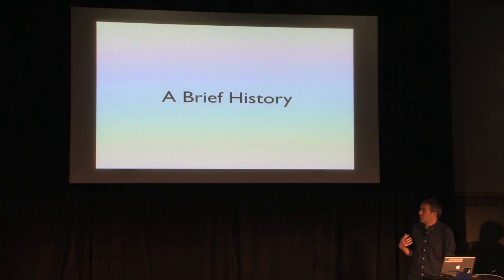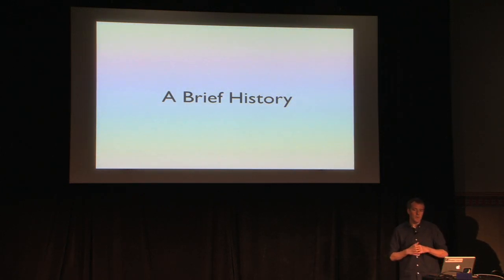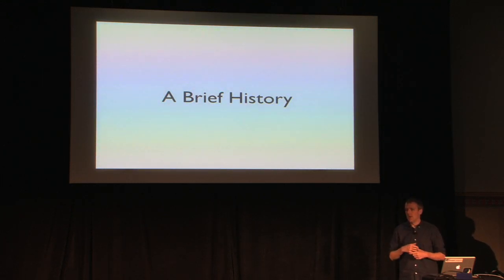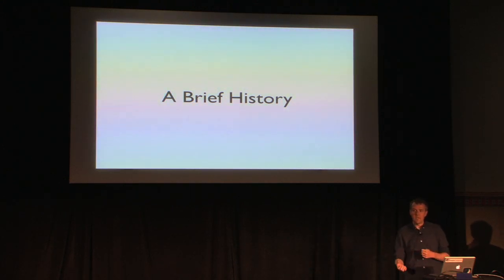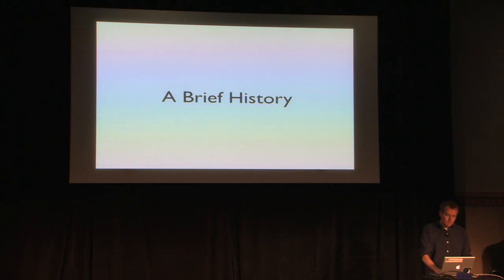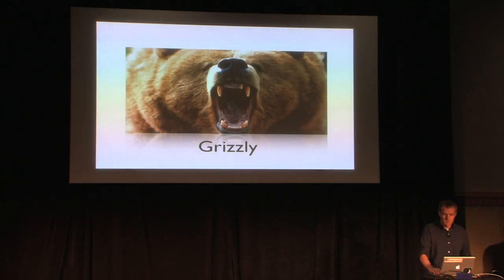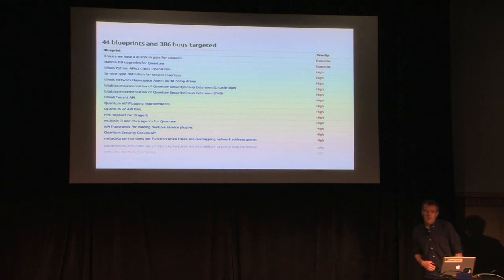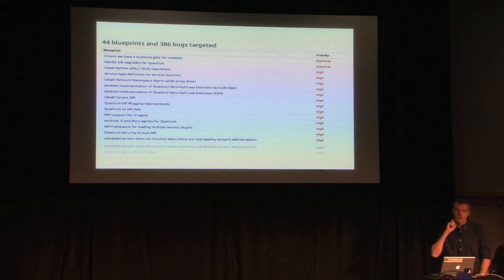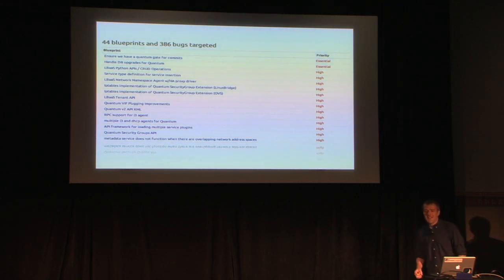A real quick brief history of OpenStack networking: it was incubated during the Essex timeframe. During Folsom it was integrated in the core, where we added resources for L2 networks, IP address management, and DHCP. In Grizzly, we got a lot accomplished — we closed 44 blueprints and fixed 386 bugs. Some were bugs that existed before in Folsom, and some were bugs we created while building Grizzly. But the team was really busy and accomplished a lot.